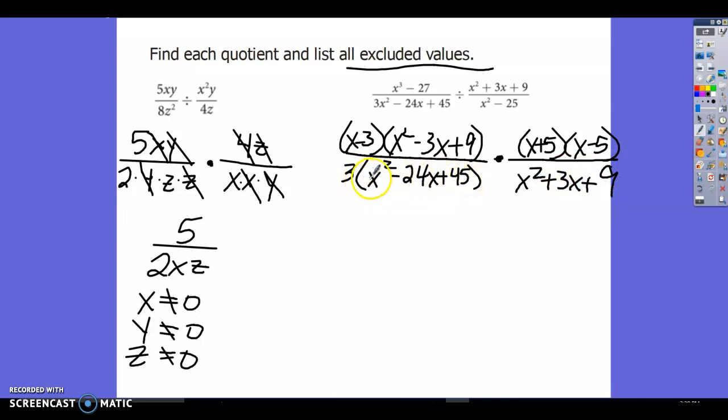What multiplies to give me 9 and adds to give me 3? That would be nothing. So this one will not factor. So we're going to put this back in here like it is. So this is going to be x squared plus 3x plus 9. That will not reduce. And now I need to see if this will factor further. So what multiplies to give me 45? Oh, wait a minute. I didn't take... I took 3 out of my first term and not my other two terms. Let me go back to here. Sorry about that, guys.